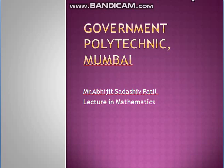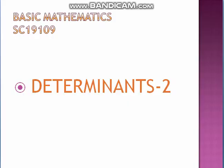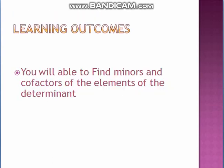Good morning friends. Myself Abhijit Pate from Government Polytechnic, Mumbai. We are learning basic mathematics SC19109, which is the core of basic mathematics. This is the second video of determinants part 2. In the first video we learned how to evaluate determinants of order 2×2 as well as order 3×3. In this video, the learning outcomes are: you will be able to find minors and cofactors of the elements of the determinant.